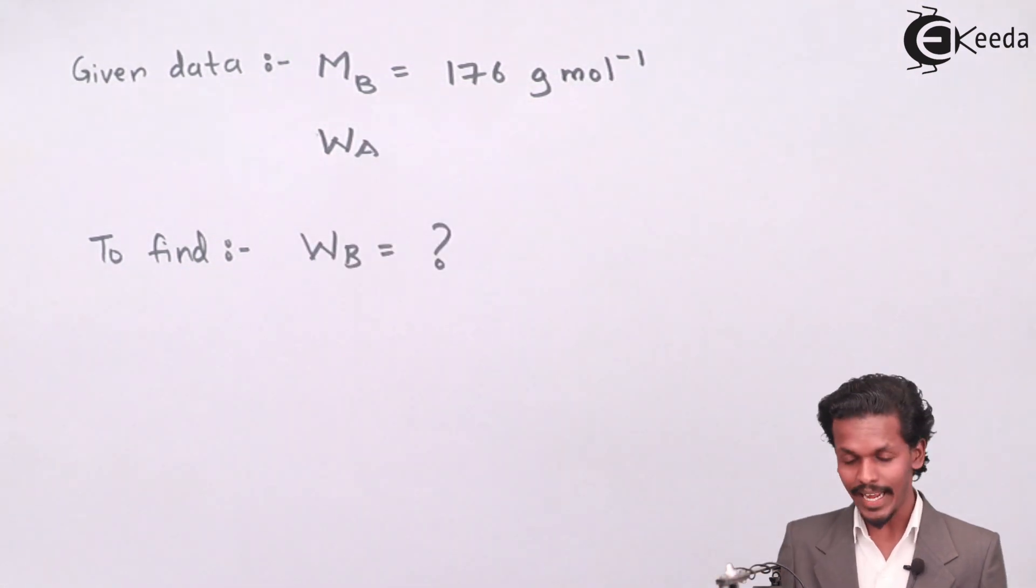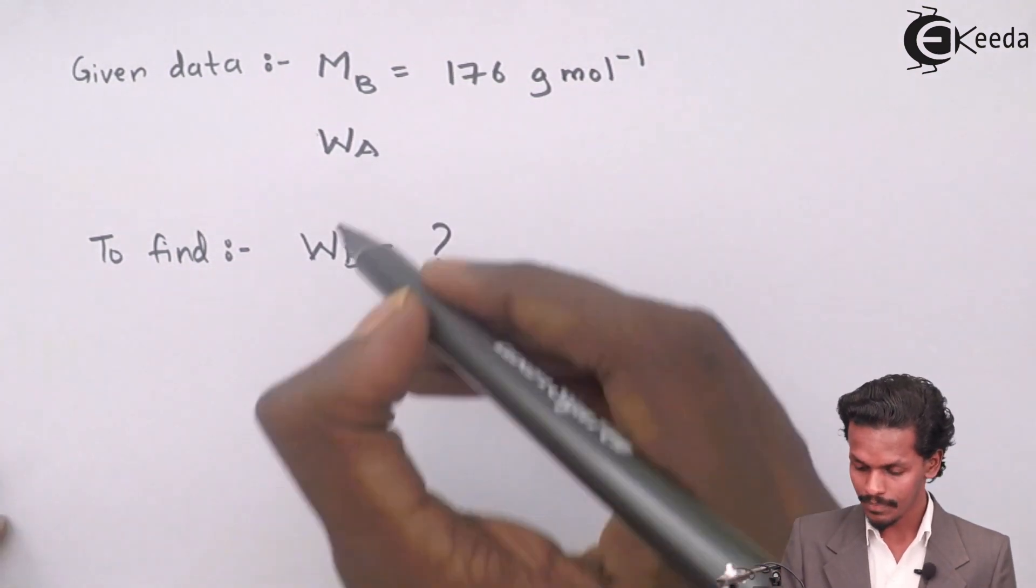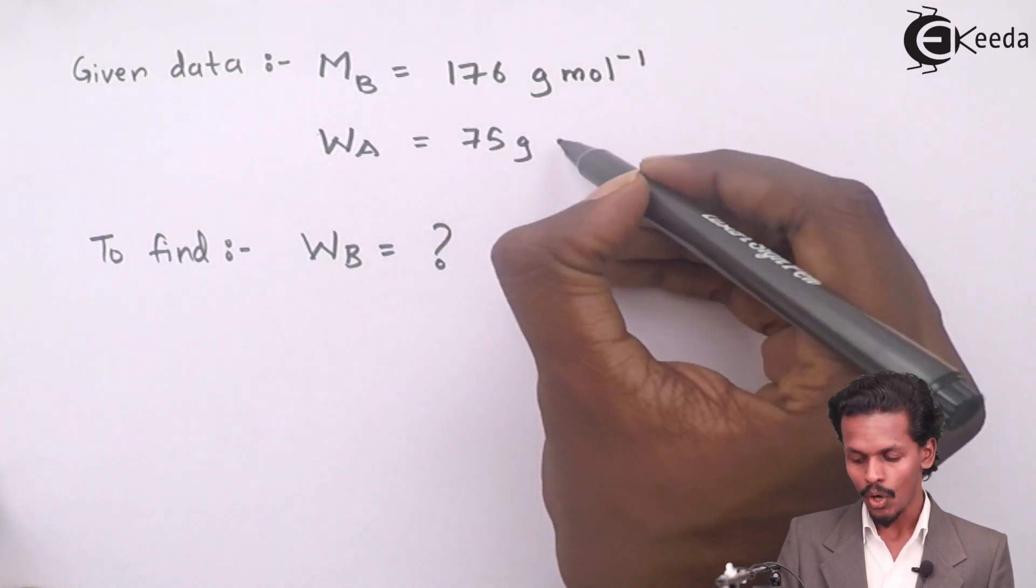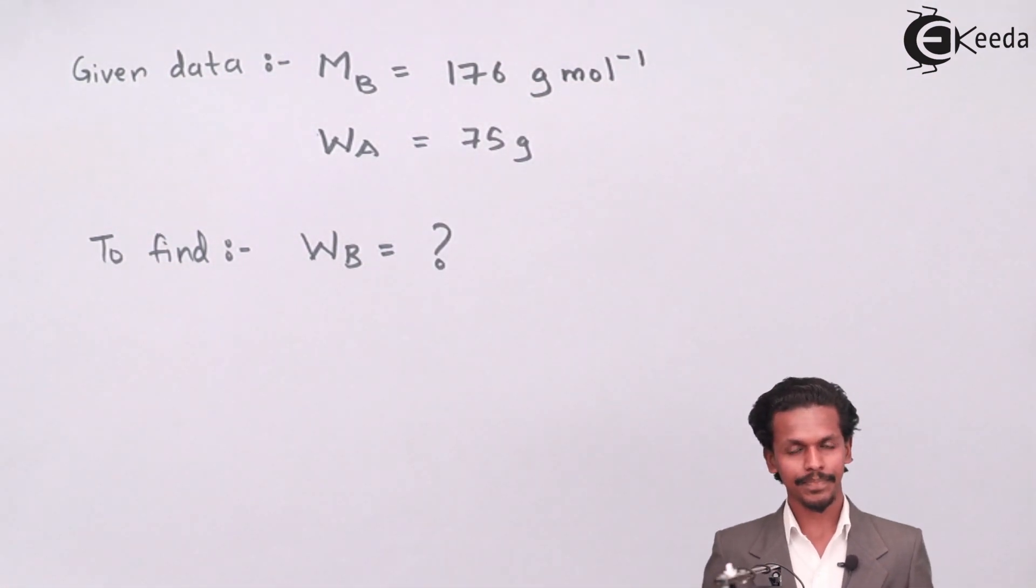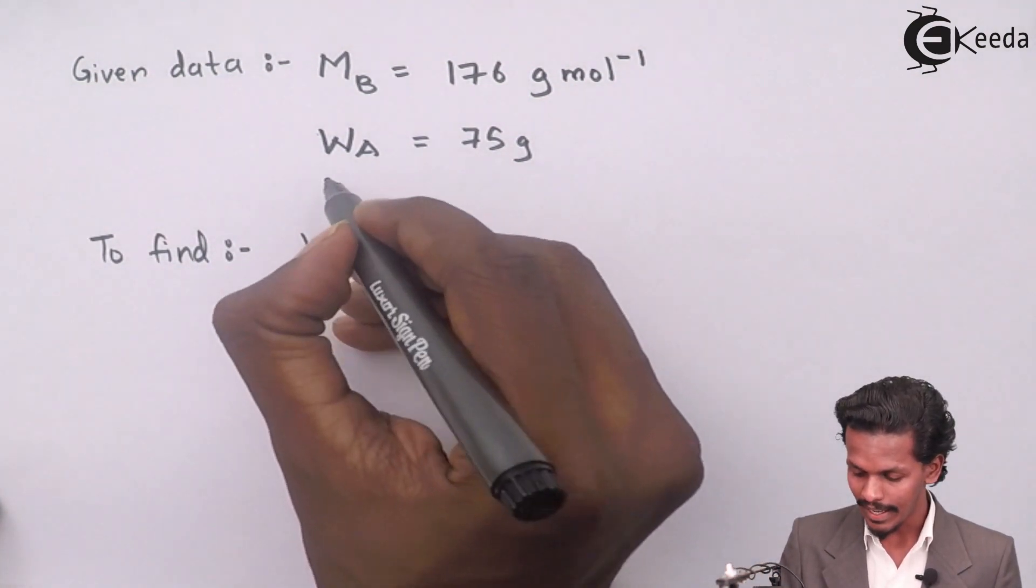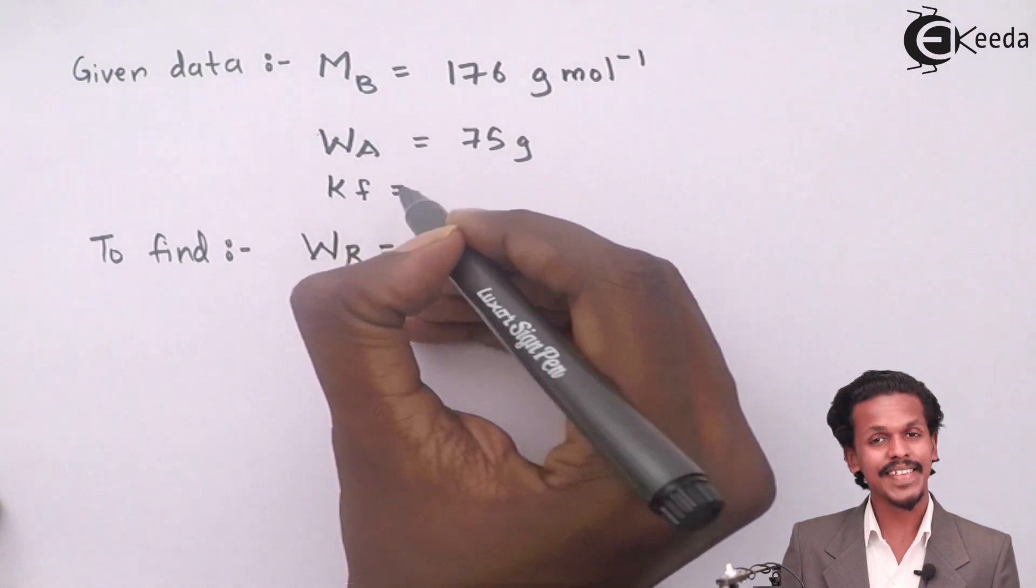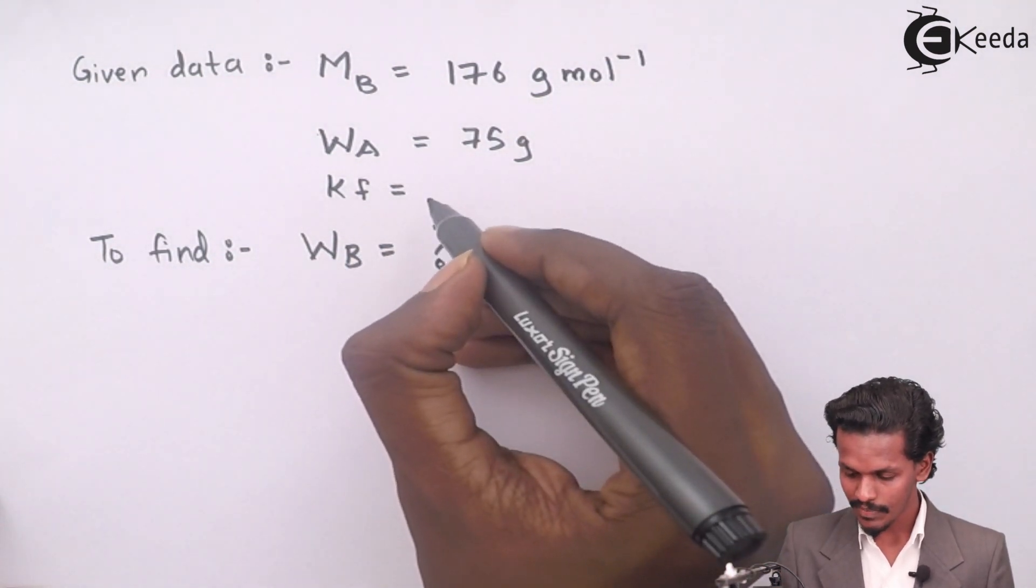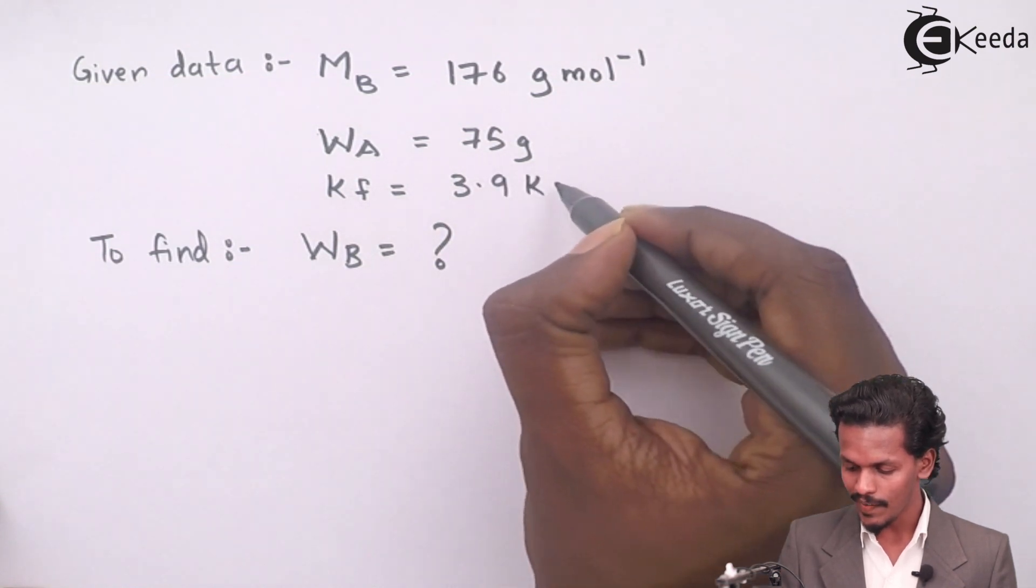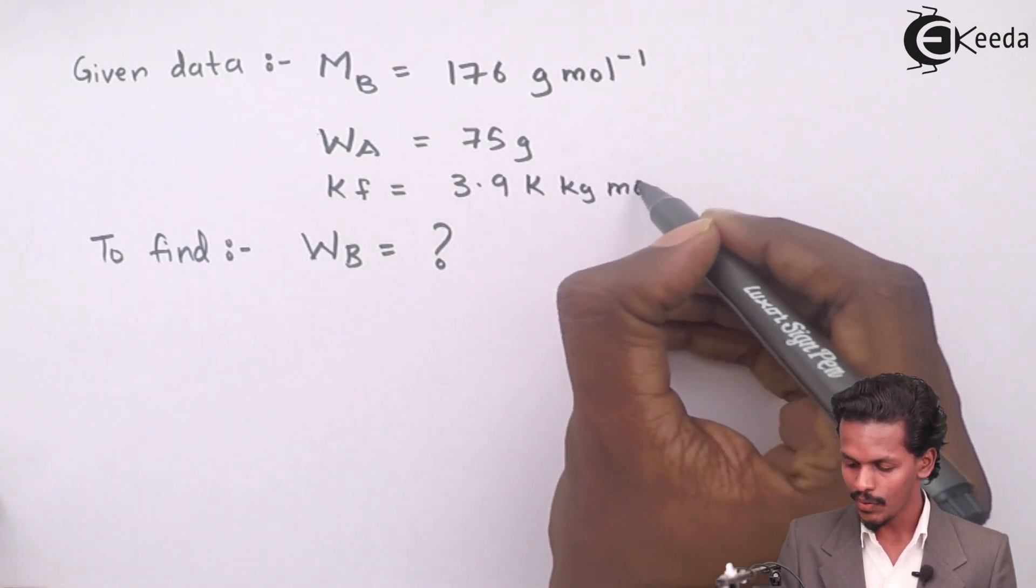Since it is a pure solvent I will denote it by WA, 75 gram of acetic acid. One more data is given to us, that is KF, the cryoscopic constant, which is 3.9 Kelvin kg per mole.